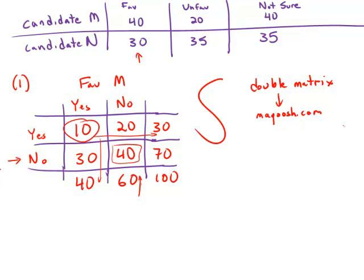Forgetting statement number one, moving on to statement number two. Statement number two tells us that the voters who responded unfavorable to both candidates was 10. So that means if we come up to the matrix here, there's 10 that's shared between these two,